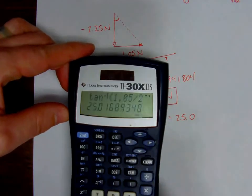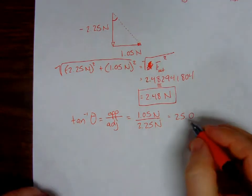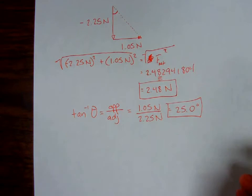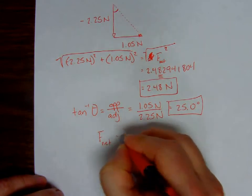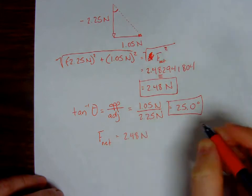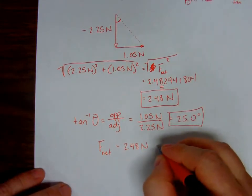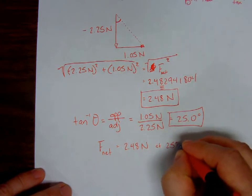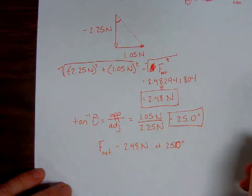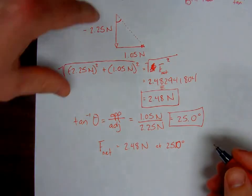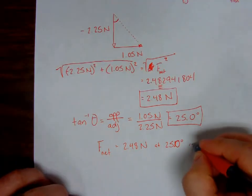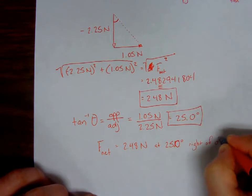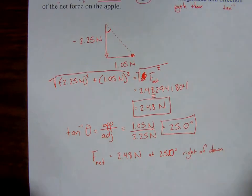So we have to state the direction as well, so we're not quite done. Force net is 2.48 newtons at 25.0 degrees. But in what direction? We can say moving out that way, so that would be to the right of down. Now, don't get caught calculating this angle, because that would come up to be 65 degrees. Make sure you're solving for the correct angle so your direction is accurate. And there we go.